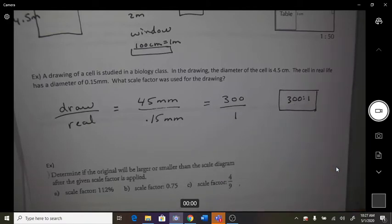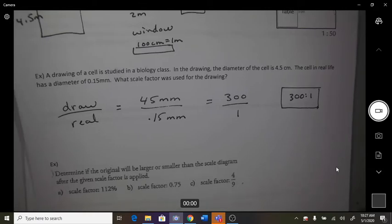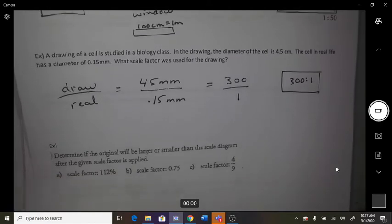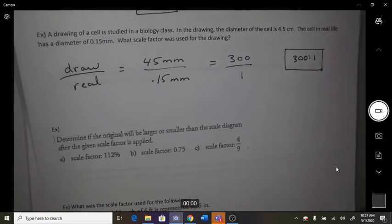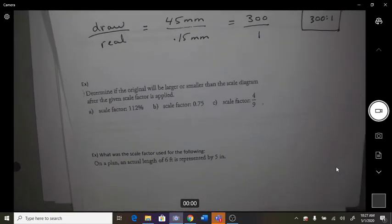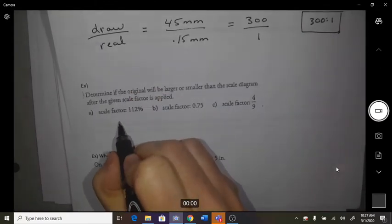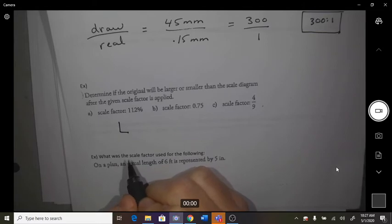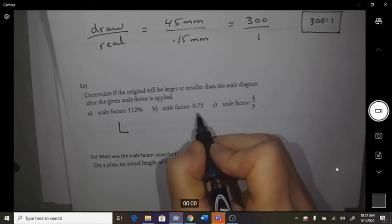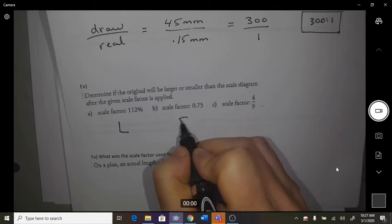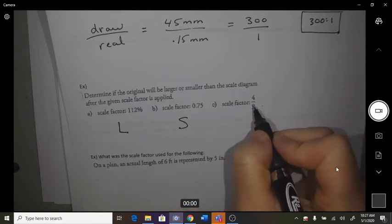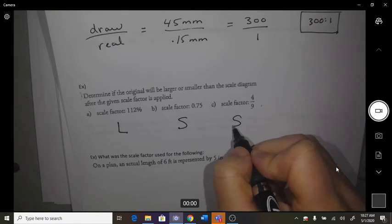Or the real life thing got blown up by 300 when you drew it. Determine if the original will be larger or smaller. So 112 percent is larger, because it's over 100 percent. If you times something by 0.75, it would get smaller. If you times something by 4 ninths, it would get smaller.